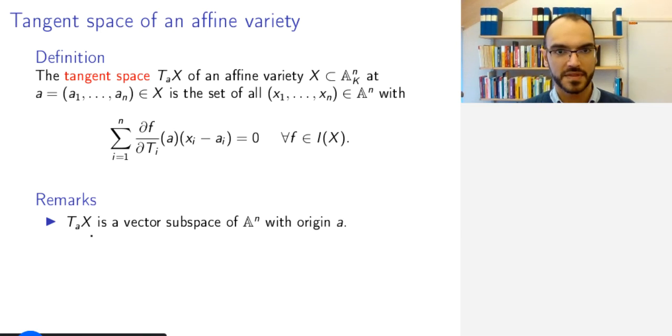So, T_a of X, the tangent space is a vector subspace of A^n with origin a. So, what does this mean? We have so far viewed A^n as a set, not as a vector space. But of course, it has the same points as the vector space k^n. So, what I here really mean is that this is k^n. So, the addition and scaling is as usual, but the origin I put at my point A.